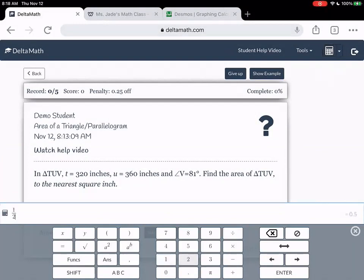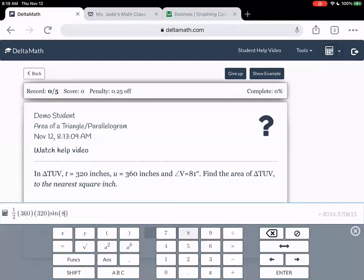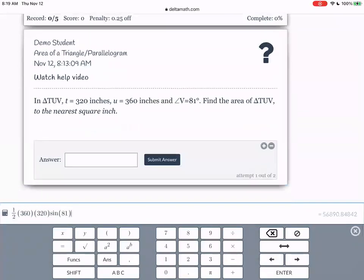So we're going to type one half, then 360, and then 320, and then this is multiplied by sine of 81. Oops. There we go. So I literally just typed what I had as my equation and you can see it says 56,890.84. So if we want that to the nearest square inch, then I'm going to type 56,891.